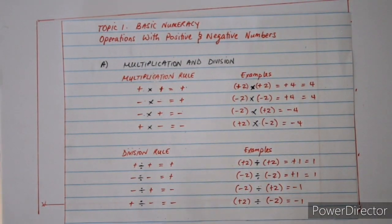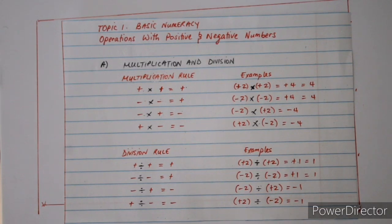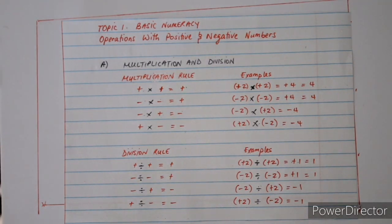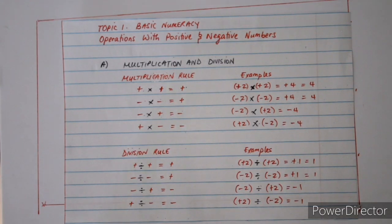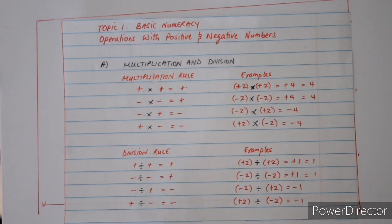For grade nines, the first unit you will cover is on basic numeracy. In grade eight you see there are only positive numbers, but as you go up to grade nine you will see there are positive and negative numbers. You will cover this on the topic known as directed numbers — what happens when we multiply, divide, add, or subtract numbers with different signs.